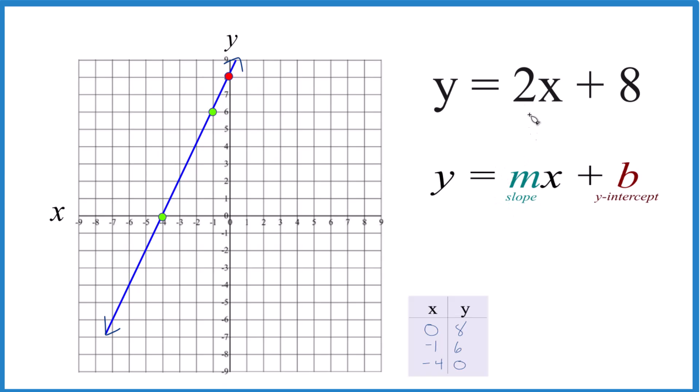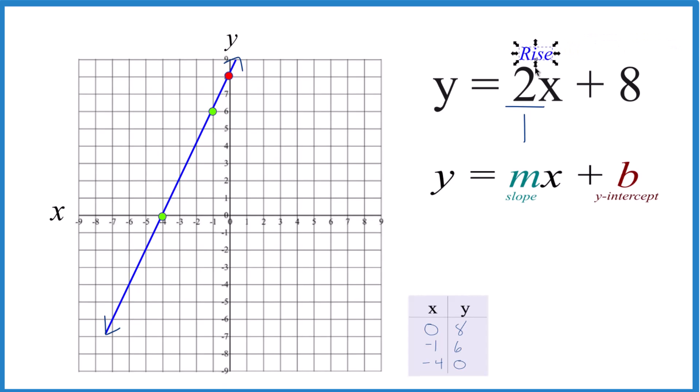Then for the slope, m here, we have 2. We're going to call that 2 over 1, though. That way the 2, that's rise, 1 is run. Now we can just go to our y-intercept and rise 2 and go over 1.